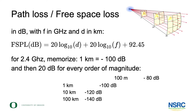We can write this down in formulas — it depends on frequency and distance. You don't need to memorize the exact formula; what's useful to memorize is: at 2.4 GHz Wi-Fi, one kilometer gives a loss of minus 100 dB. Then for each order of magnitude in distance, add another 20 dB of loss. If you roughly go to ten times the frequency, you get that same factor of 20 more loss.